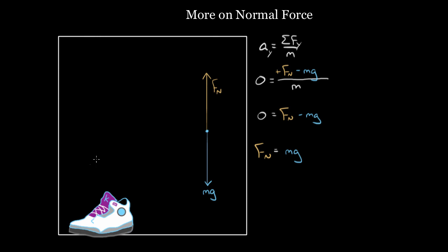What if we just added another force? What if we let the shoe sit here on the ground and I push down on it — a force of magnitude F1 pointing downward. The acceleration is still zero, so we don't have to change the left-hand side. But now I have another force in my force diagram pointing down, F1, so I'd have to subtract it. I'd have a negative F1 in the net vertical force. When I solve for Fn, I get mg plus F1. So the normal force is bigger — bigger by an amount F1. That makes sense: if you push down with an extra 10 newtons of force, the ground has to push up more to keep the shoe out of the surface.